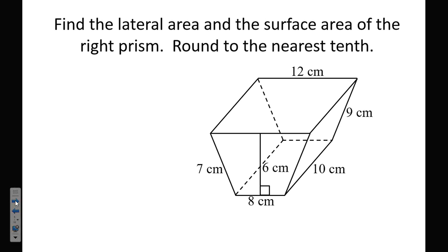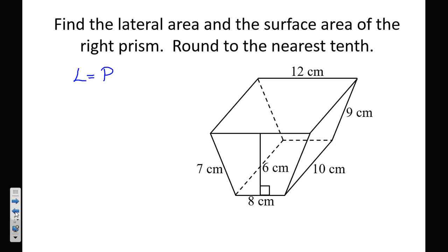Now what if we have a trapezoidal prism? The base is a trapezoid — even if it's laid on its side, the base is still a trapezoid. The lateral area is the perimeter times the height, and the total surface area is the perimeter times the height plus 2 times the area of the base. To find the perimeter of the base, shade it so you can see which face you're working with. One side is 12 and another is 9.